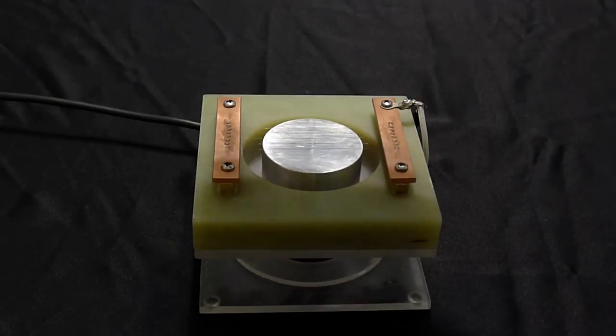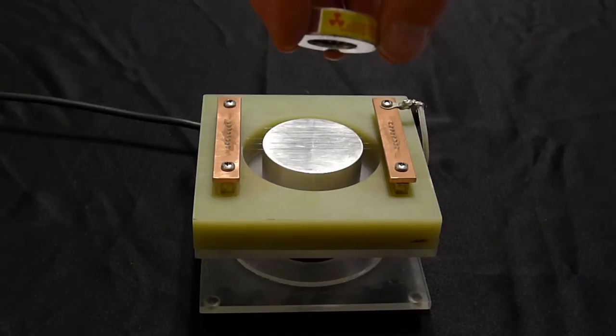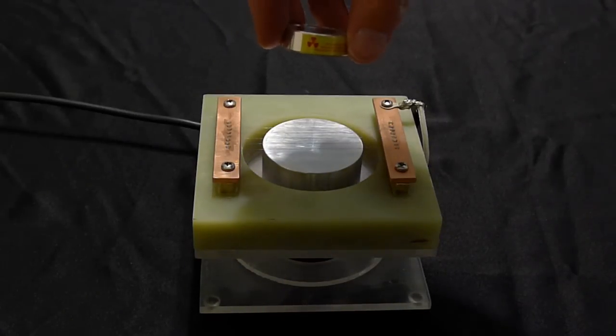Here I have a polonium-210 source, nucleus spot source, happens to be fairly high activity, 5 millicuries. I'm just leasing this guy, but I'm going to bring it near the spark detector and we'll see what happens.